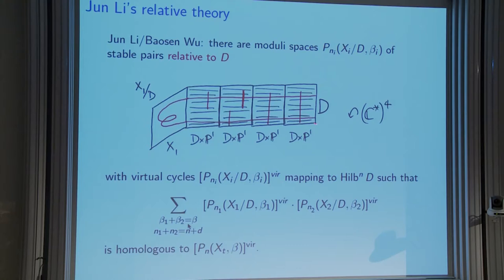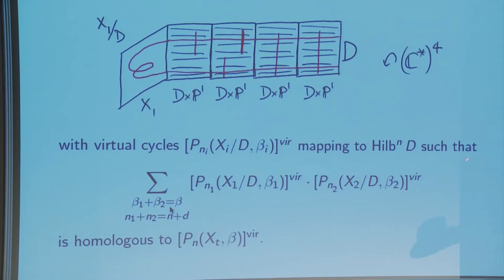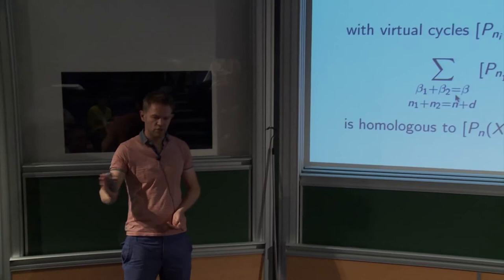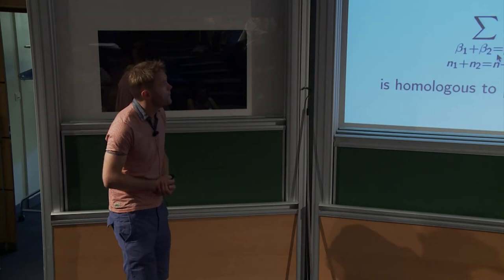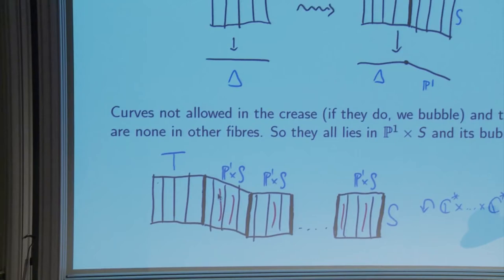You intersect the boundary values of curves on X₁ with boundary values on X₂ in the Hilbert scheme of D where they match up, and that gives a new virtual cycle deformation-equivalent to the virtual cycle on the original smooth guy. In a one-parameter degeneration of a smooth threefold into this singular guy, you get a family of moduli spaces and family of virtual cycles.